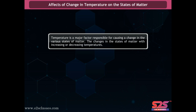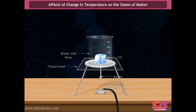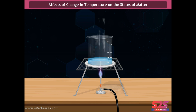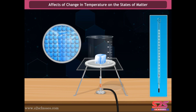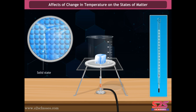Effects of change in temperature on the states of matter: temperature is a major factor responsible for causing changes in the various states of matter. Take some ice in a container and heat it until it changes into liquid, then heat it further until it changes into gaseous state — water vapor. We observe that on increasing temperature, solids change to liquids and liquids to gases, because particles start vibrating with greater speed, and this extra energy helps them overcome the inter-particle force of attraction.